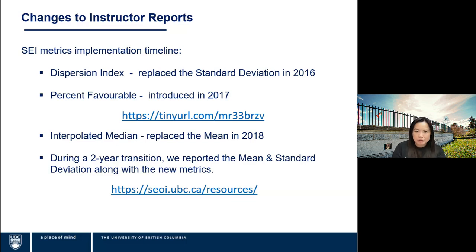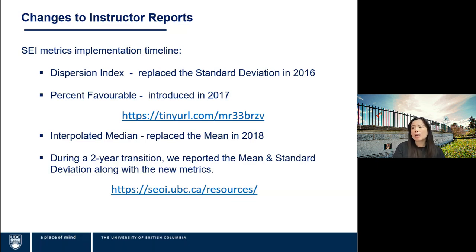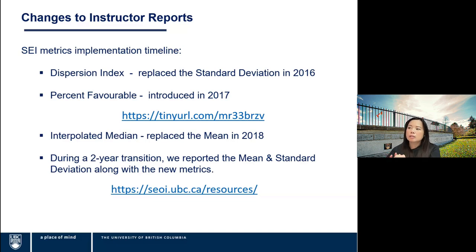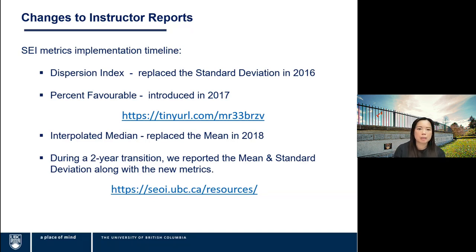Here's a timeline of what we did. Back in 2016, we replaced the standard deviation with the dispersion index. We then introduced the percent favorable in 2017 — there's a link to a blog post on how that was introduced. In 2018, we replaced the mean with the interpolated median. Then between 2018 through 2020, during the two-year transition, we reported both the mean and standard deviation along with the new metrics. You can find out more at the resources link.